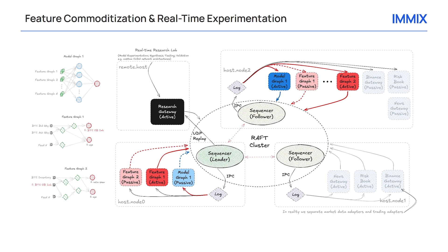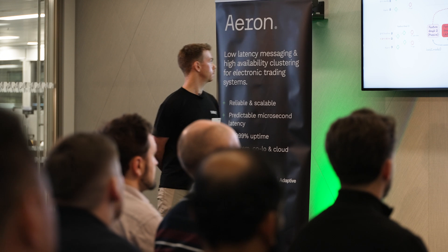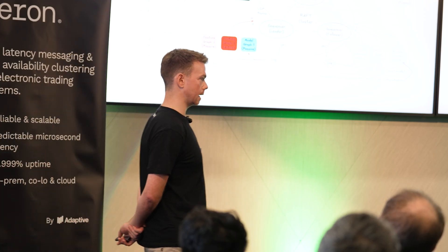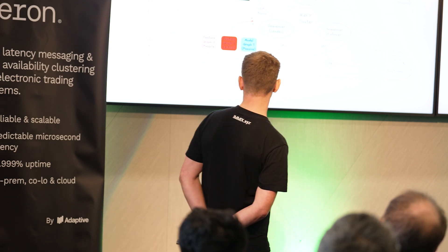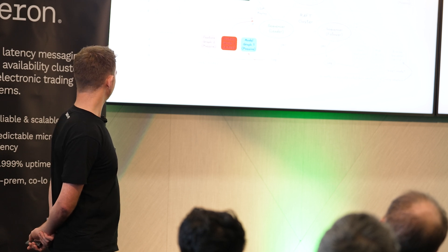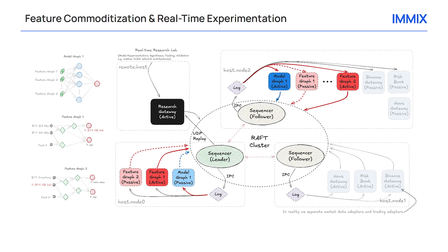We like to commoditize the research infrastructure and expressions. We typically see feature graphs and model graphs as computational graphs so we can express research ideas in this way. On the schematic you can see a high-level representation of a Raft cluster with different gateways — news gateway, risk book, Binance gateway — so market data comes in and these raw features flow into the sequenced stream. They're consolidated, and different feature graphs can pick up models. Narrowing in on feature graph one: Bitcoin bid quantity and Bitcoin ask quantity go in, run inference through different transformation nodes in the graph, and a feature is emitted back into the sequence stream. Feature graph two can then be chained to that, bringing in all kinds of exotic features into the second graph, which ultimately feeds the model.